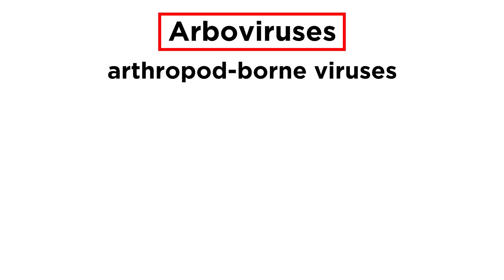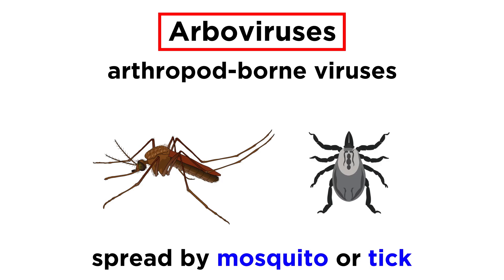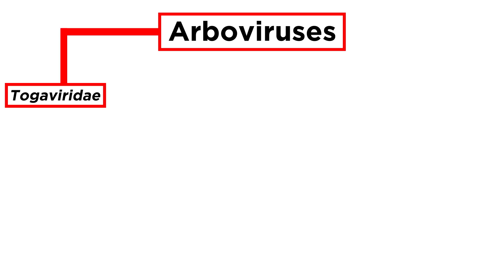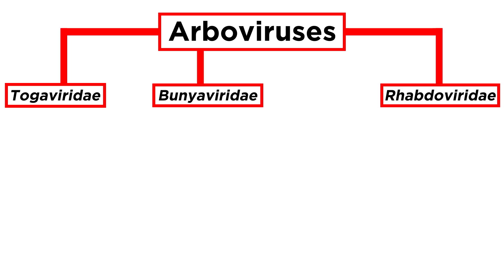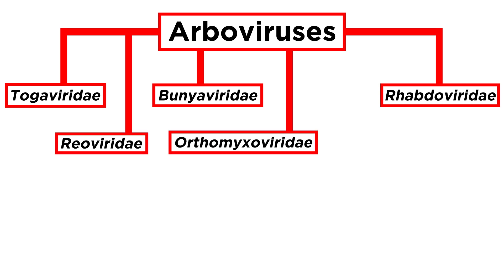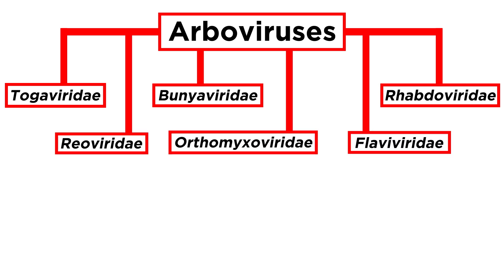Let's take a step back and put things in context virus-wise. There are over 500 arthropod-borne viruses, which are called arboviruses. That's just a general term for viruses that are spread to humans by the bite of an infected mosquito or tick. Arboviruses can be divided into six families, including togaviridae, bunyaviridae, rhabdoviridae, reoviridae, orthomyxoviridae, and flaviviridae.